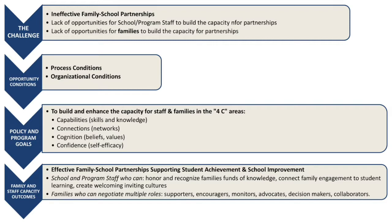As transition stakeholders, we often experience the challenge of ineffective school, family, and community partnerships. This can be characterized by a lack of opportunities for school and program staff to build the capacity for partnerships to support transition goals, and also a lack of opportunities for families to contribute to that capacity building. In planning to address this challenge, we first look at opportunity conditions, which may be process-oriented — such as how we provide programs, services, and supports — as well as organizational conditions that support or inhibit the impact of these processes.